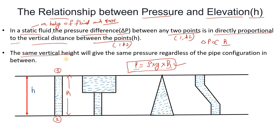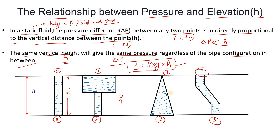From the above definition, the same vertical height h will give the same pressure difference, delta p, regardless of the pipe configuration in between. If the height between point one and two is h, whether the pipe configuration differs, the pressure delta p will be the same.